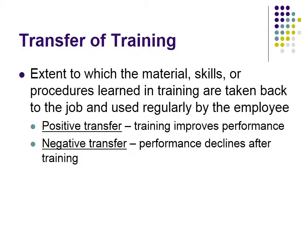Now, moving from how to teach to what happens once someone has learned something — they've taken a training class with good instructional design, received good feedback and knowledge of results — we have the next level of the definition of training. Once someone has learned it, we want to see it result in behaviors in the workplace, with the thought that those behaviors will lead to organizational goals. We refer to this as transfer of training: the transfer from successfully learning new knowledge, skill, or ability to the actual use of that KSA in the workplace.